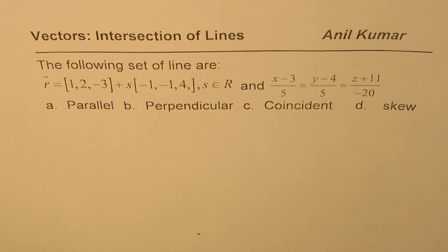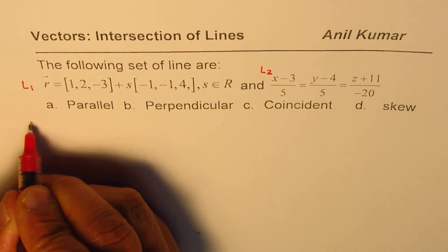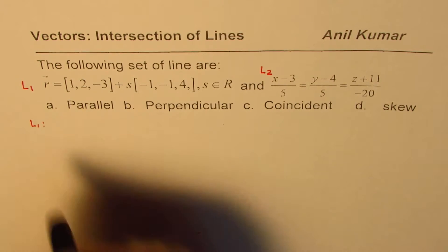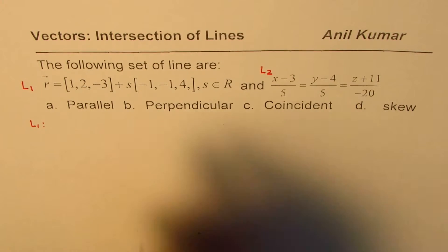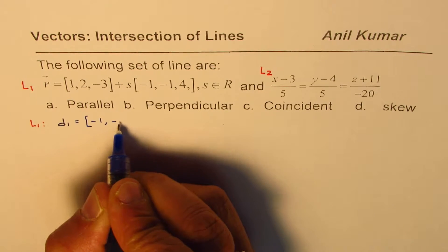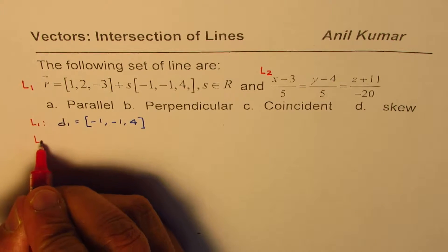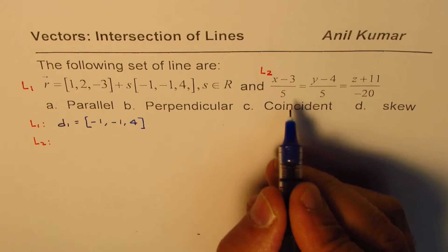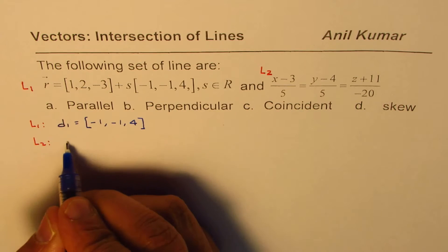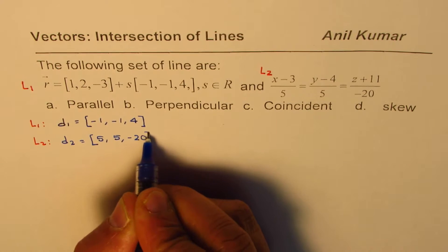Let us analyze the given equations. The best thing is to start with the direction vector. We'll call this line 1 and this line 2. In line 1, the direction vector d1 is (-1, -1, 4). The direction vector of line 2 is (5, 5, -20), so we can write d2 as (5, 5, -20).